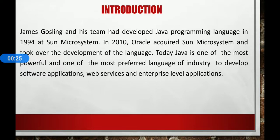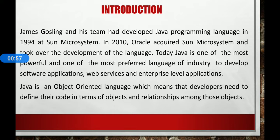James Gosling and his team developed the Java programming language in 1994 at Sun Microsystems. In 2010, Oracle acquired Sun Microsystems and took over the development of the language. Today, Java version 12 is one of the most powerful and preferred languages in the industry to develop software applications, web services, and enterprise-level applications. Java is an object-oriented language, which means developers need to define their code in terms of objects and relationships among those objects.